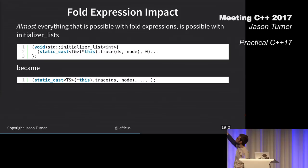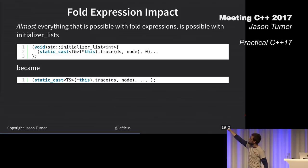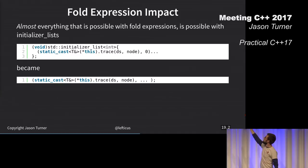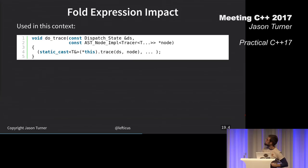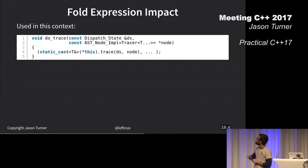The first part is the initializer list. We're just expanding the things inside of our initializer list, calling these functions. Here I'm doing a right fold with a comma operator expansion. I'm going to skip over this slide for the sake of time.